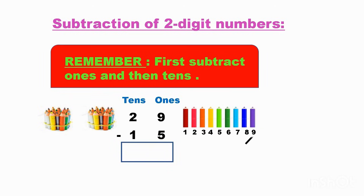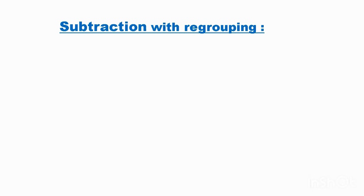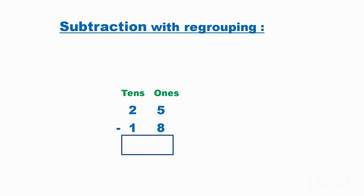Now first we'll subtract the ones. Here we have nine pencils, take out five: one, two, three, four and five. When you take out five, we get four. So write four in the ones place. Next, there are two tens — take out one ten, we get one ten. So twenty-nine minus fifteen is equal to fourteen.